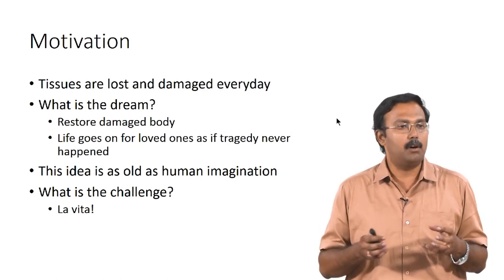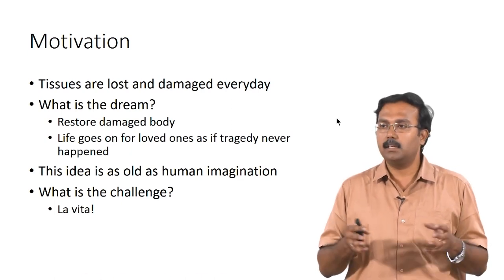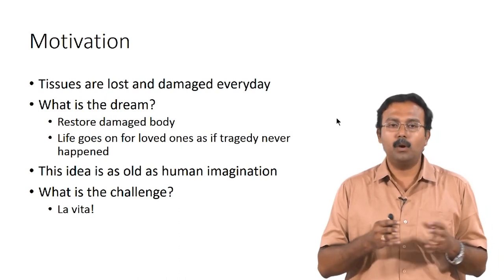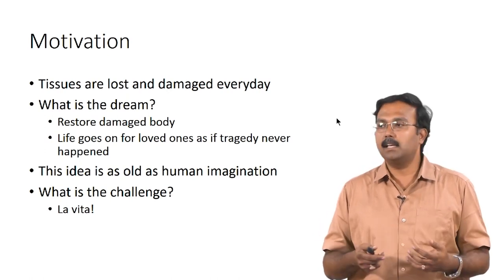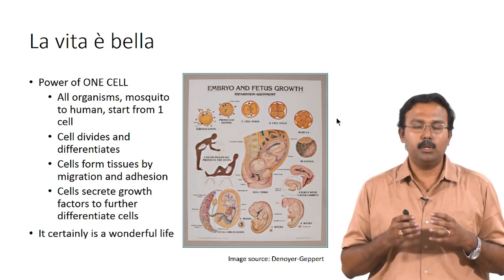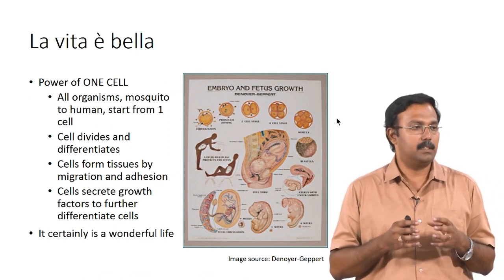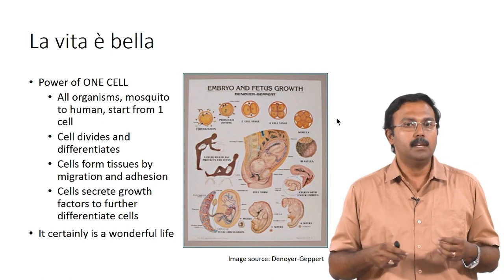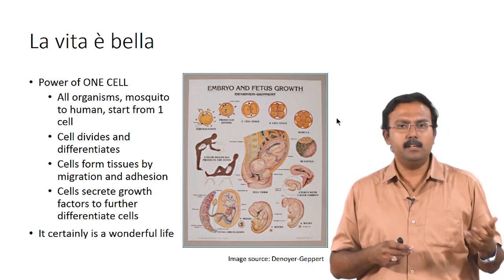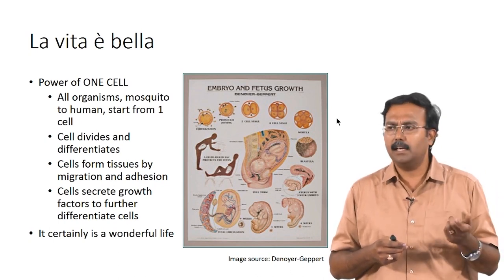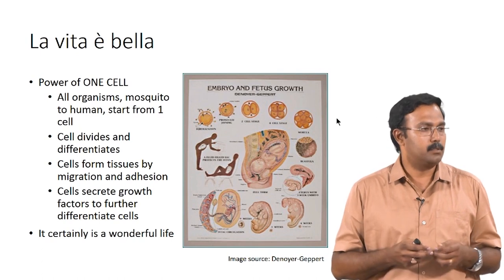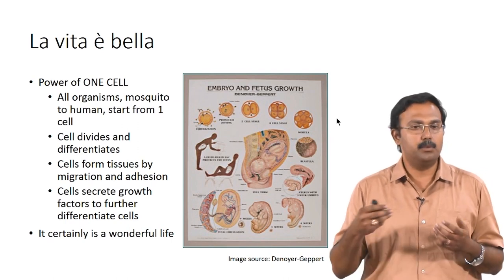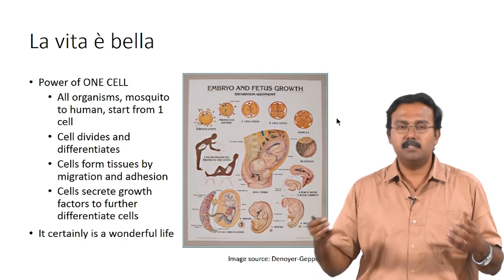Life itself is very complicated and beautiful. Most of us here have a biology or biotechnology background, so we do know some things about how life starts, but we do not actually sit back and think about it. What I have shown here is what I call the power of one cell. All organisms, whether it is a mosquito or a human being, start from one cell. The single cell basically divides and starts differentiating to form different tissues — it starts migrating and differentiating to form various types of tissues.